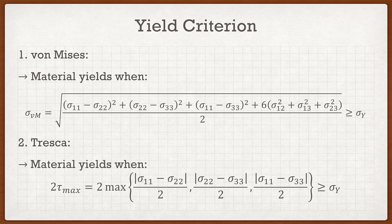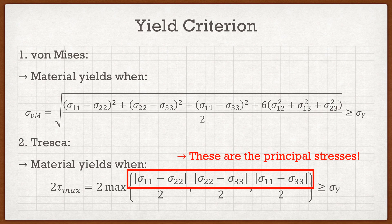Here's the main problem many students will have. You might go to your Cauchy stress matrix, take sigma_11, sigma_22, and sigma_33 directly and plug them in — and then wonder why you're wrong. The key is that sigma_11, sigma_22, and sigma_33 in the Tresca formula are the principal stresses, not the diagonal entries of the Cauchy stress matrix directly. What you have to do is find the principal stresses, i.e., the eigenvalues of the stress matrix. I recommend throwing the Cauchy stress matrix into Mathematica, finding the eigenvalues, and using those differences. That's the critical trick for the Tresca yield criterion.